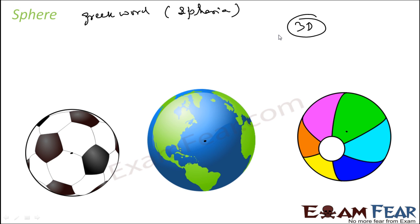For a circle, we say it is a set of all points equidistant from a common point at the center. Here also we are saying the set of all points are equidistant from a fixed point center, but this is three-dimensional space. It has no edges and it is not a polyhedron.